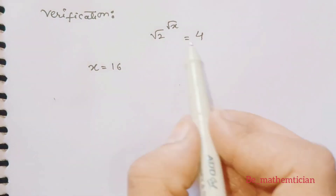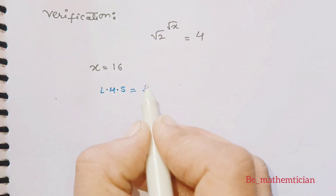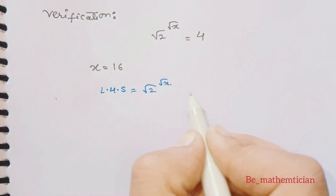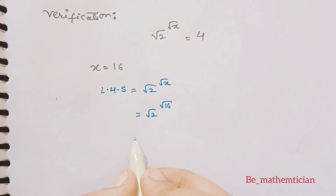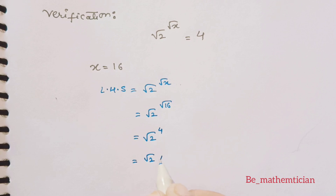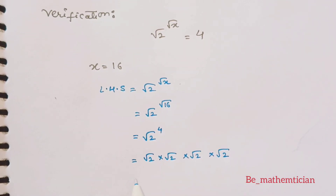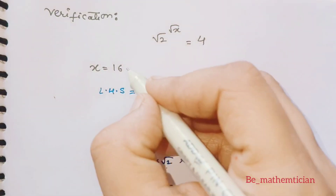Let's verify whether the answer is correct. First take LHS: it is root 2 raised to root x. In place of x we put 16, so this will be root 2 raised to root of 16. We know root of 16 is 4. Root 2 raised to 4 means root 2 multiplied by itself 4 times, which equals 2 into 2, that is 4. So our LHS is equal to RHS.